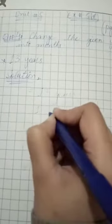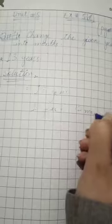When you convert years to months, you multiply by 12. So we will write 13 multiplied by 12.